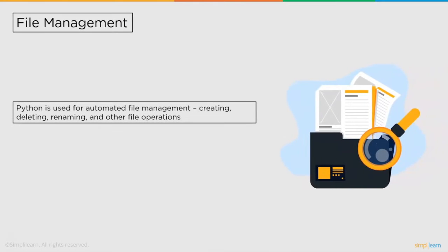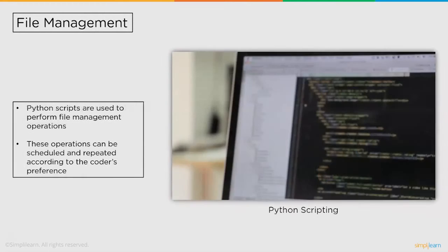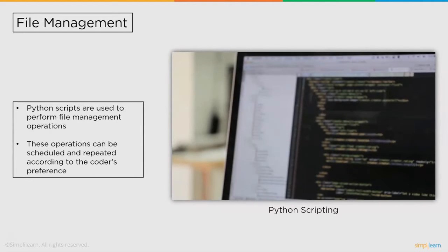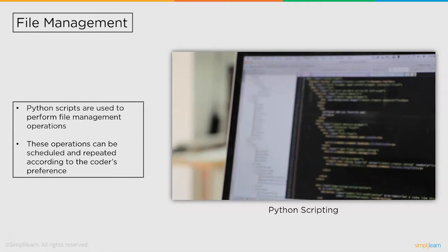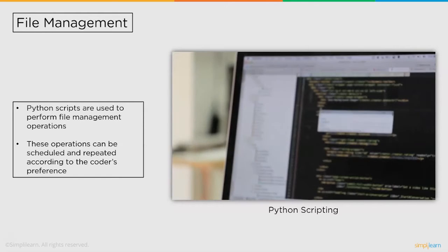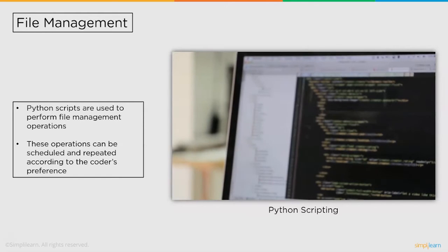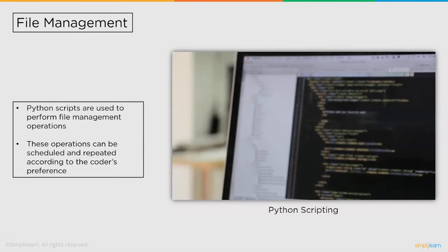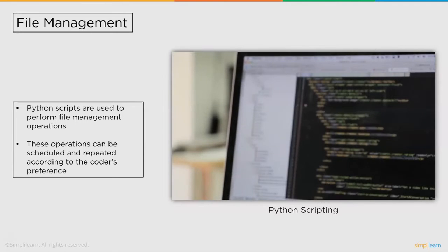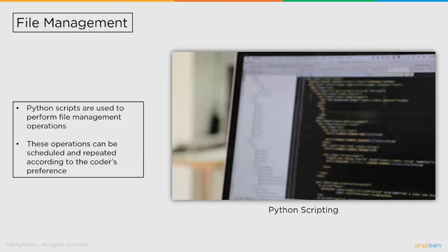Followed by chatbots, we have file management. Python also offers automated file management features. Python is used for automated file management — creating, deleting, renaming, and other file operations. A handful of Python scripts can perform full-blown file management operations automatically or at a scheduled time. Python scripts are used to perform file management operations either on the same file system or remotely. They are especially useful when files have to be modified over the network using some API technologies.